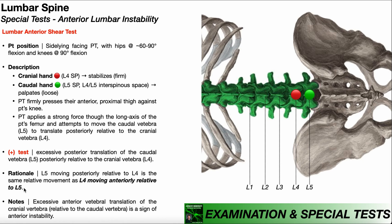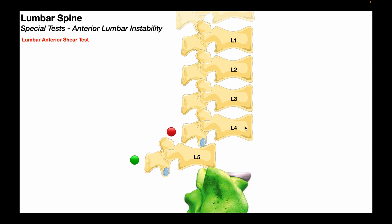The anterior shear test is an indirect measure of excessive anterior movement of the cranial vertebrae relative to the caudal vertebrae — in this case, L4 relative to L5. If somebody tests positive, that would indicate anterior instability at that segment. By directly moving the caudal vertebrae posteriorly, it allows us to indirectly assess anterior movement of the cranial vertebrae — the same relative movement.